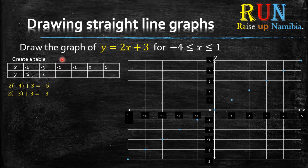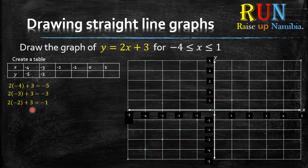Again, you move on to the next row. What is your x value here? It's negative 2. So you plug that negative 2 into the table. Now I want you to pause the video and complete this table — there are still 3 values that are missing. So pause the video now.